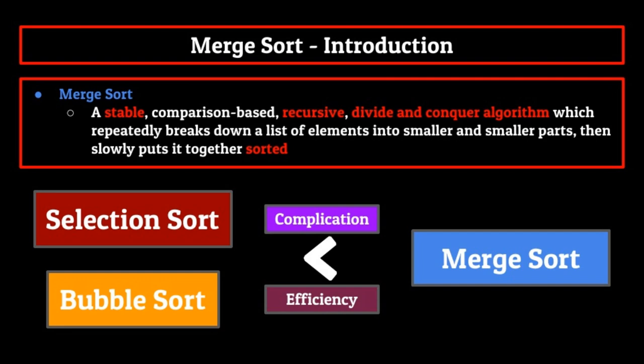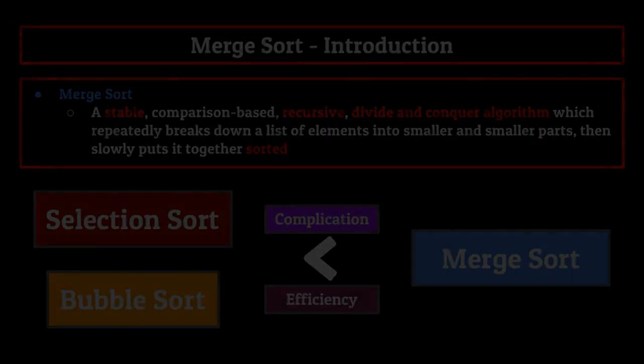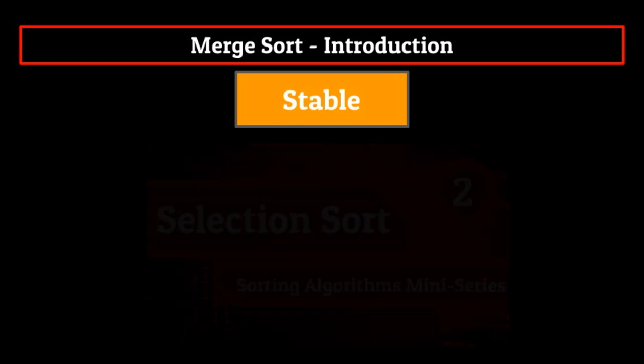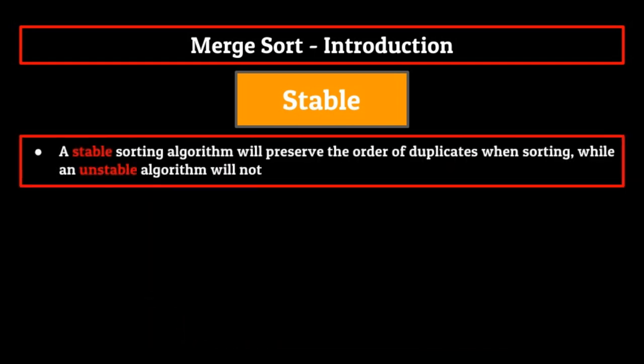Because merge sort is much more complicated than anything we've covered so far, let's break down the definition a little bit further. By my count, we used four different adjectives to describe the algorithm, each of them adding to the overall complexity of the definition. Starting with stable, this is something we've covered before in our selection sort video. But the gist of it is that a stable sorting algorithm will preserve the order of duplicates when sorting, while an unstable algorithm will not.